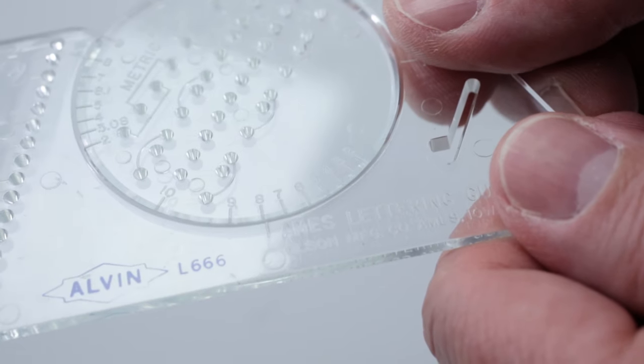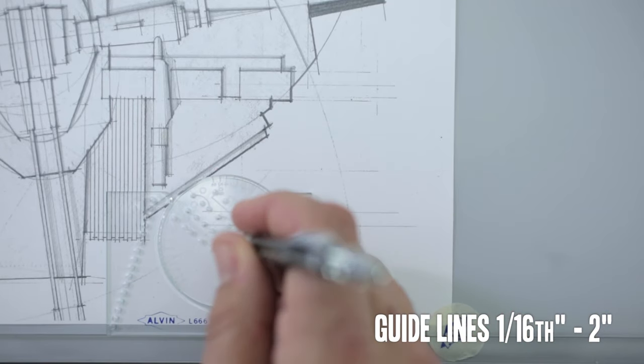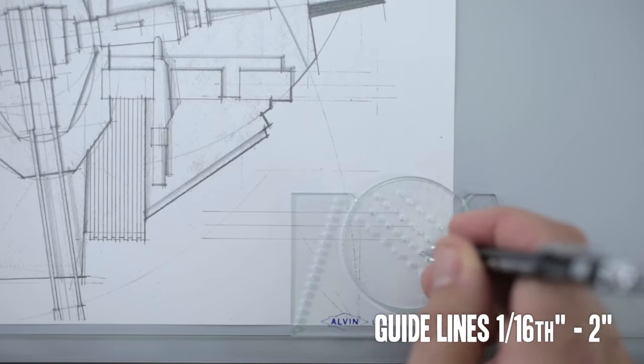Lettering guides are set up to accommodate measurements in both metric and standard. The lettering guide is used to draw guidelines from sixteenth of an inch to two inches tall.